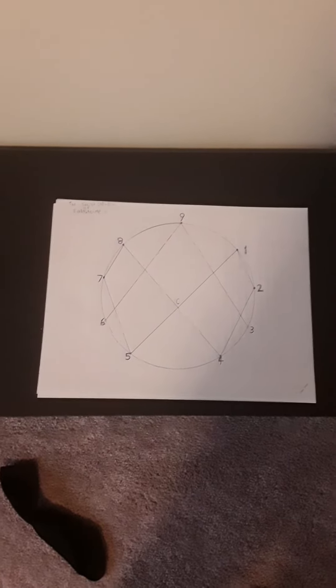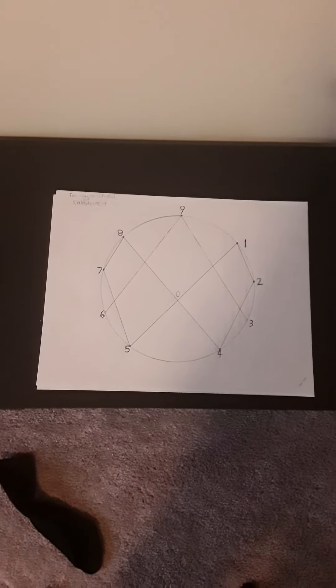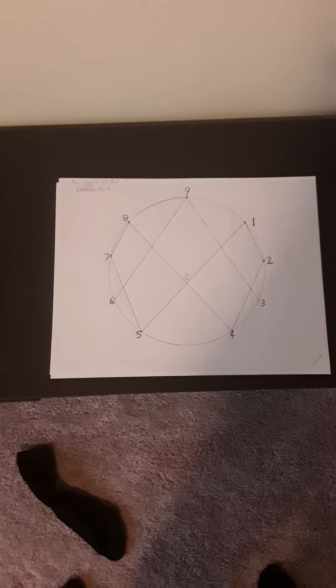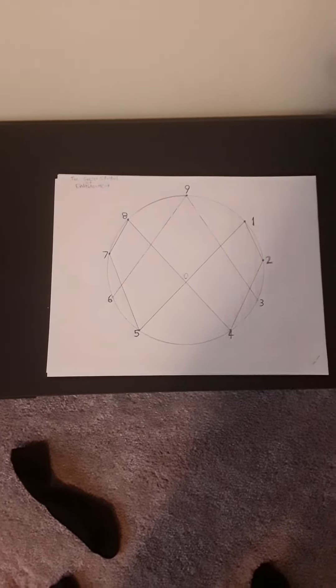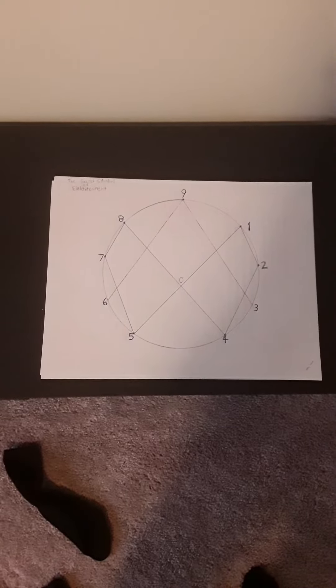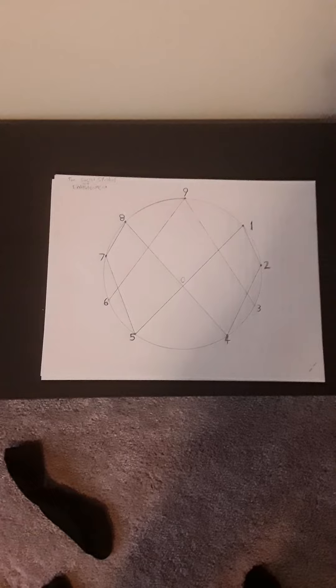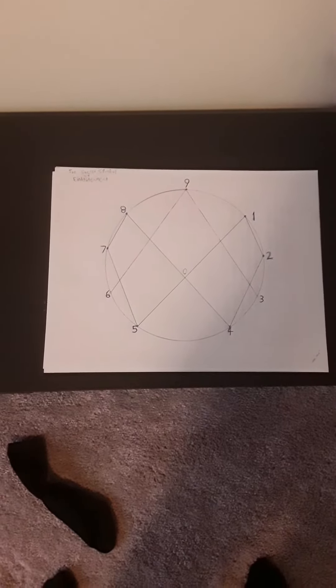This is vortex-based mathematics. About 50 years ago, a guy named Marco Rodin discovered an equation so eloquent that involved nine numbers around a circle. When you follow what these numbers are doing, you get doubling.